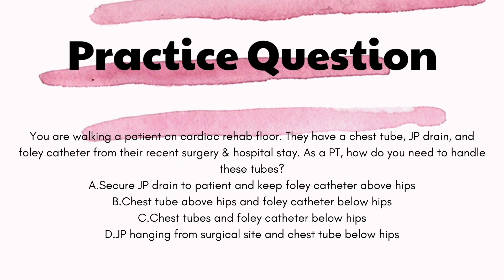The correct answer is C. You are walking a patient on Cardiac Rehab 4. They have a chest tube, JP drain, and Foley catheter from their recent surgery and hospital stay. As a PT, how do you need to handle these tubes? A says secure the JP drain to the patient and keep the Foley catheter above the hips — the first half is correct, but we want to keep the Foley below the hips because gravity helps urine flow out of the bladder into that Foley bag. So A is incorrect.